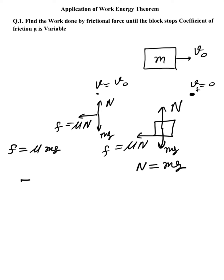Now according to the work-energy theorem, the sum of all work done is equal to the change in kinetic energy. So: work done due to normal force plus work done due to mg plus work done due to friction equals change in kinetic energy. The block is moving in this direction.